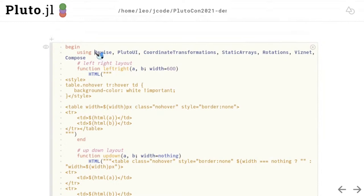I use two functions left-right and up-down to manage the layout using tables. For the plots, I mainly use the compose and viznet. Also, because there are several 3D visualizations in the notebook, I use the coordinate transformation, static arrays, and rotations to assist the coordinate translation.